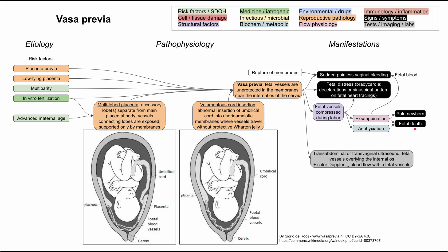The main way to identify vasa previa is with ultrasound — either transabdominal or transvaginal — where you'll see fetal vessels overlying the internal os. With color Doppler, you might see decreased blood flow within the fetal vessels, indicating they are being compressed so much that blood cannot pass through those exposed fetal vessels.